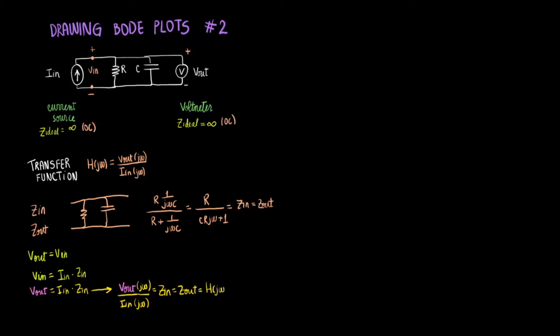So our transfer function will then be the expression we found up here, which was R over C R j omega plus 1. So that's great because it means that we found our transfer function. And we would be now ready to get our Bode plots.